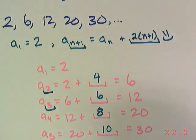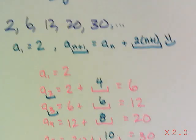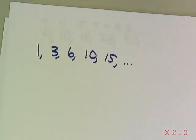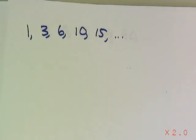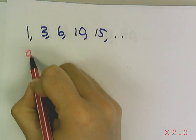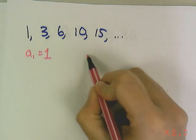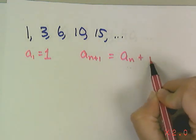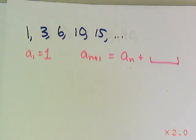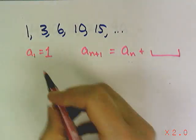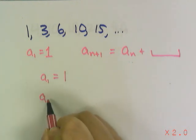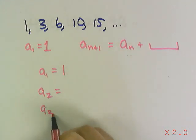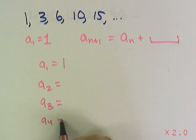Now let's try this next sequence, same technique. So I know the rule has to start a sub 1 equals 4, and then a sub n+1 has to equal a sub n plus stuff. And the hard part is finding out what that stuff is. So a sub 1 was 1, and then I have a sub 2, a sub 3, a sub 4, and a sub 5.